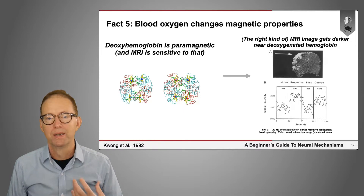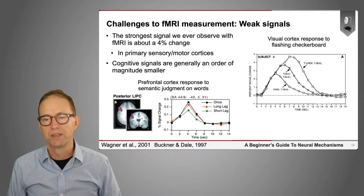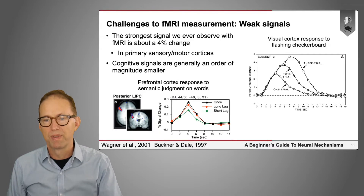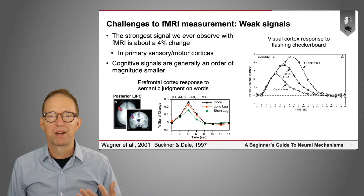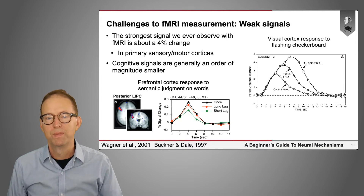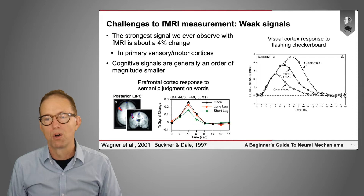fMRI is challenging for several reasons. First, the signals are relatively weak — about the strongest signal ever observed with fMRI is on the order of four to five percent signal change, seen in response to a brightly flashing visual checkerboard in the visual cortex. Cognitively interesting signals are generally about an order of magnitude smaller. For example, the prefrontal cortex response to semantic judgments — deciding whether words are abstract or concrete — is on the order of about 0.25 percent.